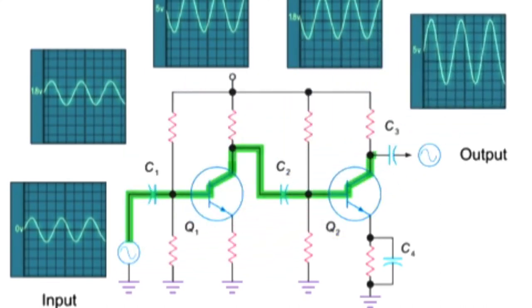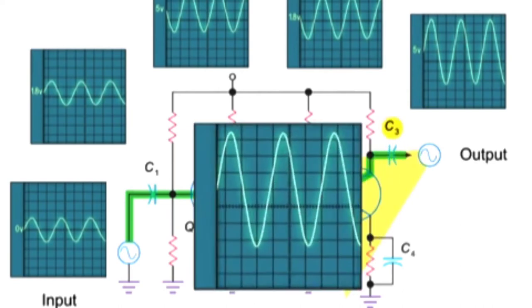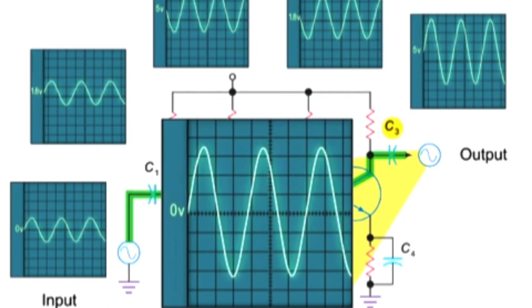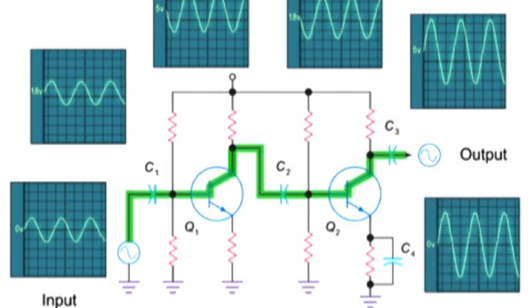A third and final coupling capacitor, C3, filters the amplified signal once again of any residual DC voltage, resulting in a final amplified wave output that is in phase with the original input.